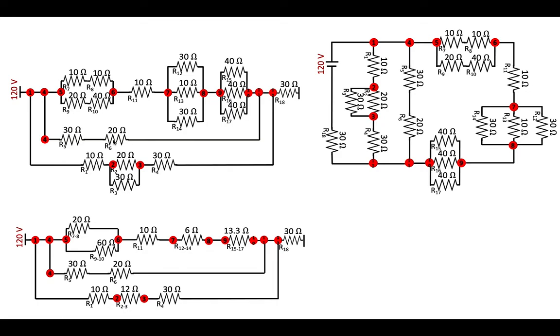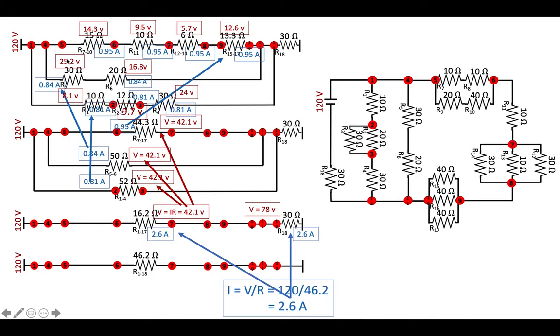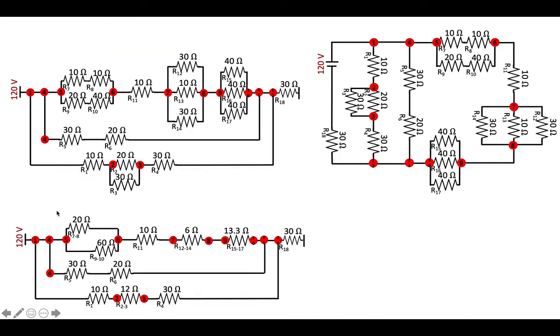And if you look here, what I did in the next step was I took this, see this one up here, this 7 through 10, I actually broke it up into these two in parallel, which means I bring the voltage up, 14.3 volts, solve for current.